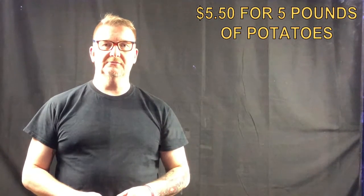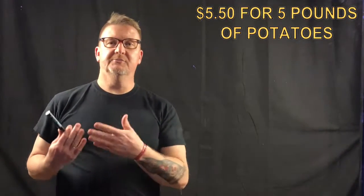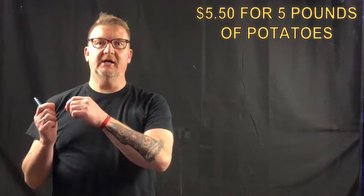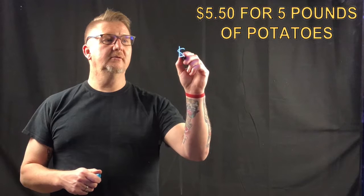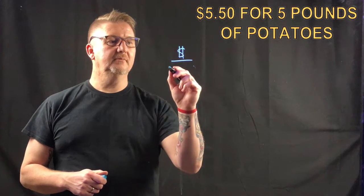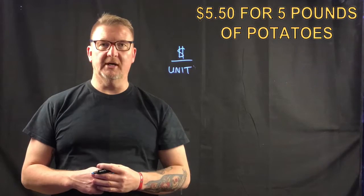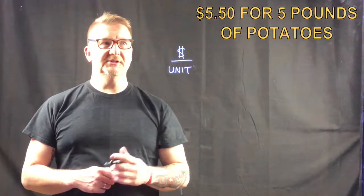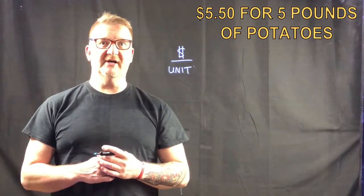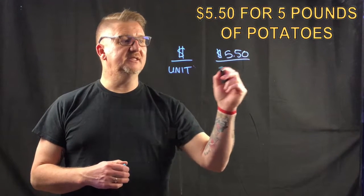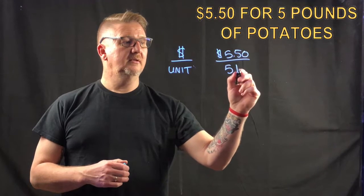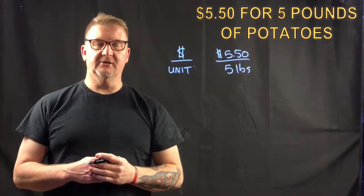Our next example is $5.50 for five pounds of potatoes. When we're dealing with money, when there's money involved and you're talking about one item is money and one item is not, you always want to put money on the top and the unit on the bottom. So in this case, $5.50 for five pounds of potatoes, you're putting $5.50 on top and five pounds of potatoes on the bottom.